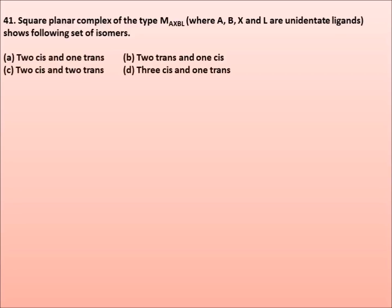Two cis and one trans, two trans and one cis, two cis and two trans, three cis and one trans. Correct answer is option A, two cis and one trans isomers.